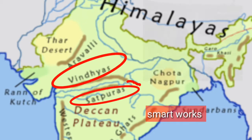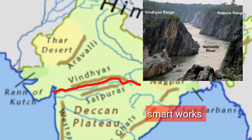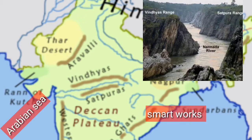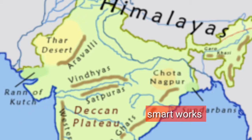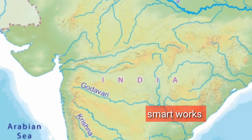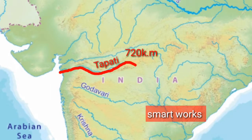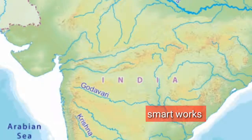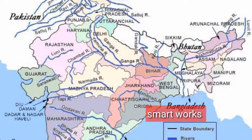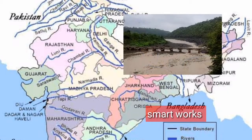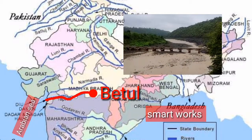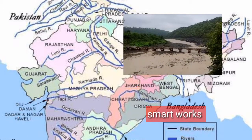India — this river flows through and finally merges into the Arabian Sea. It spans 520 km, originates in Madhya Pradesh, and ultimately flows into the Arabian Sea.